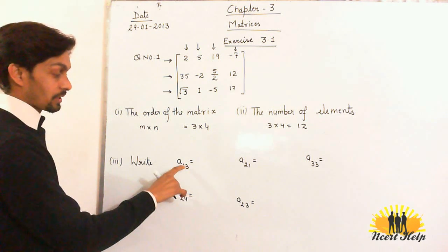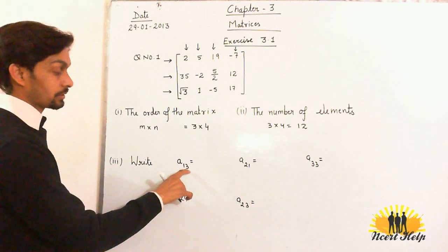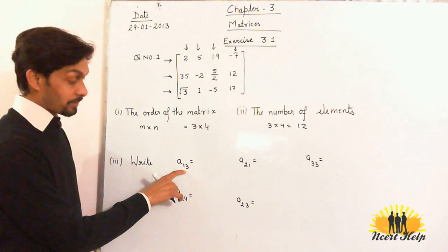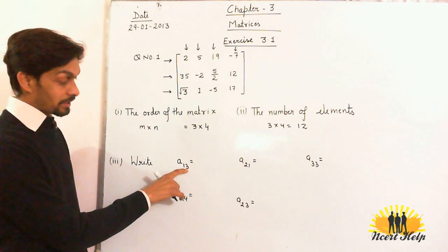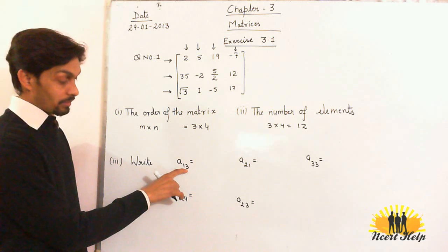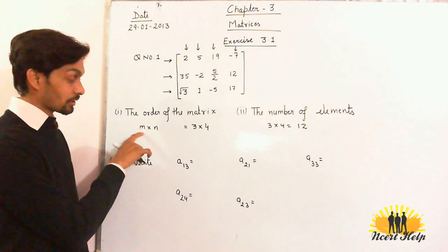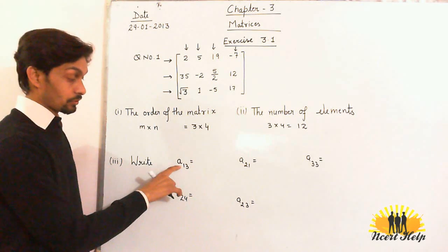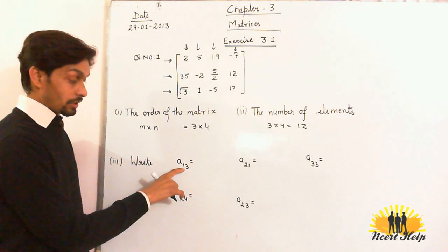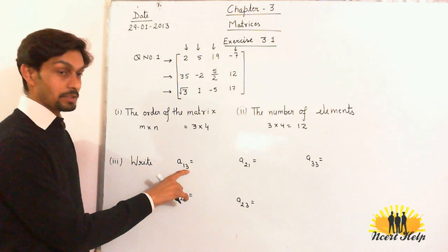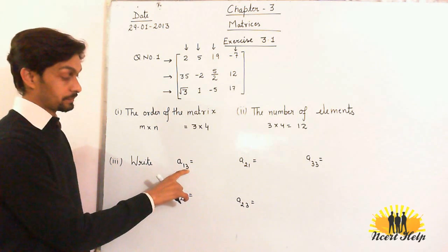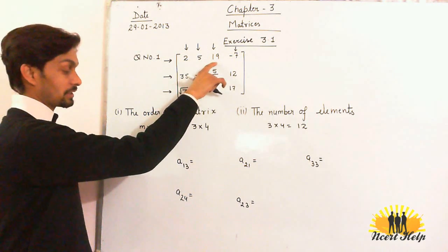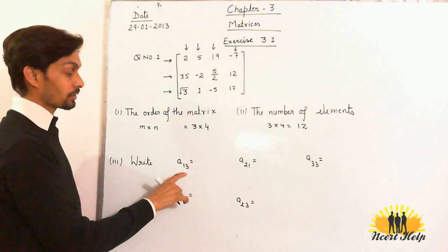Now we have to write the element a₁₃. To find a particular element of the matrix, the position is determined by two numbers: the first number is always the row and the second number is always the column. So a₁₃ represents the element in the first row, third column. The first row, third element is 90. So a₁₃ = 90.